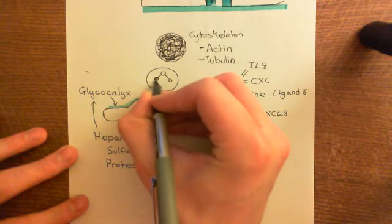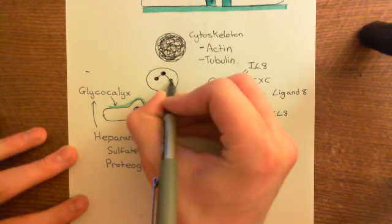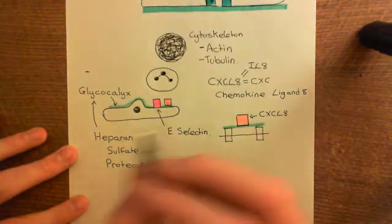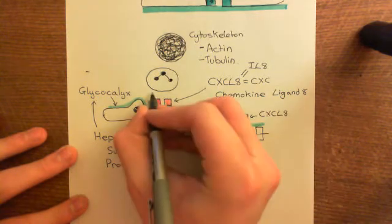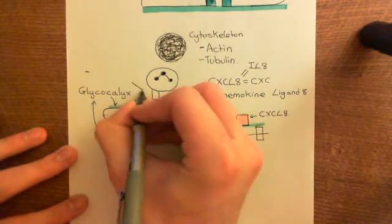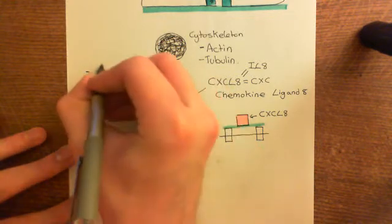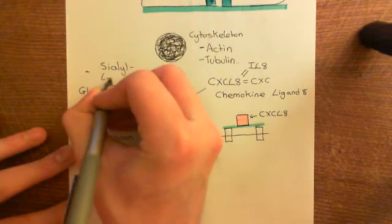Okay, so here is our neutrophil with its multi-lobed nucleus here. Right, so what are the molecules that E-selectin and CXCL-8 here bind to? Well, E-selectin binds to a small molecule on the surface of the neutrophil known as sialyl-Lewis-X. So, this is sialyl-Lewis-X.